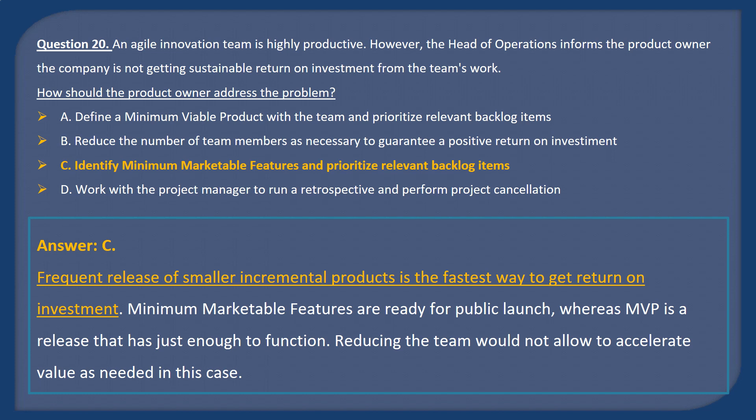Answer C. Frequent release of smaller incremental products is the fastest way to get return on investment. Minimum marketable features are ready for public launch, whereas MVP is a release that has just enough to function. Reducing the team would not allow acceleration of value as needed in this case.